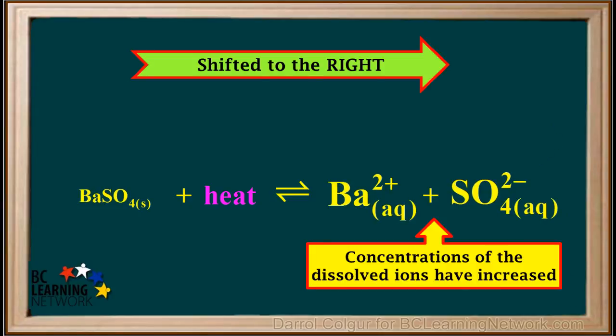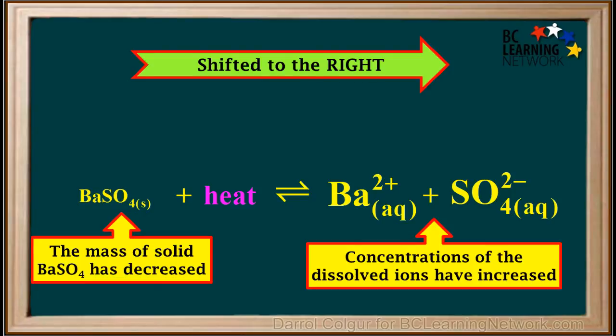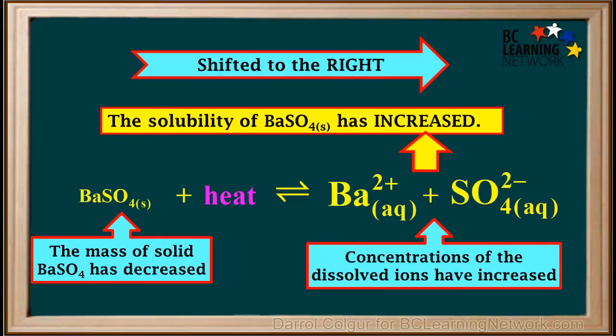We see that as a result of shifting to the right, the concentrations of the dissolved ions have increased, and the mass of the solid BaSO₄ present has decreased. So because a shift to the right caused the mass of the solid to decrease and the concentration of dissolved ions to increase, we can say that the solubility of BaSO₄ has increased.